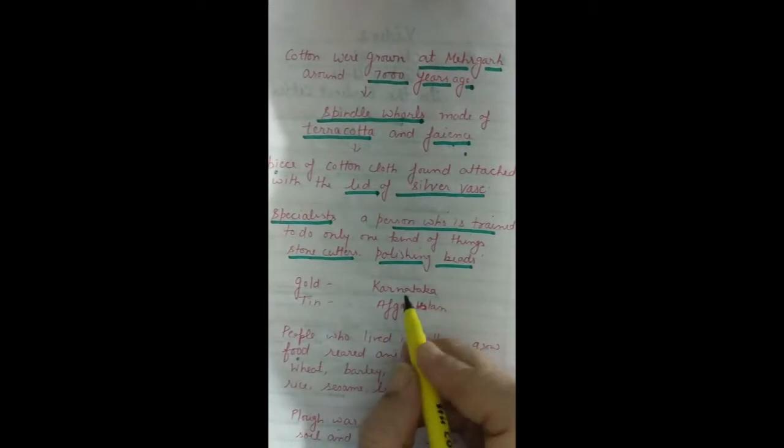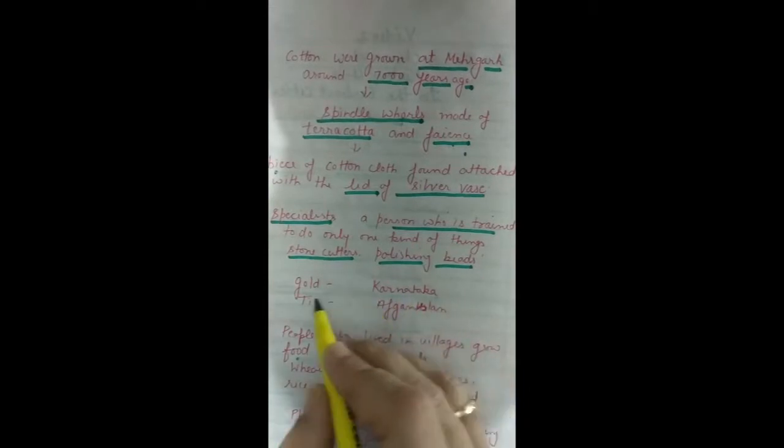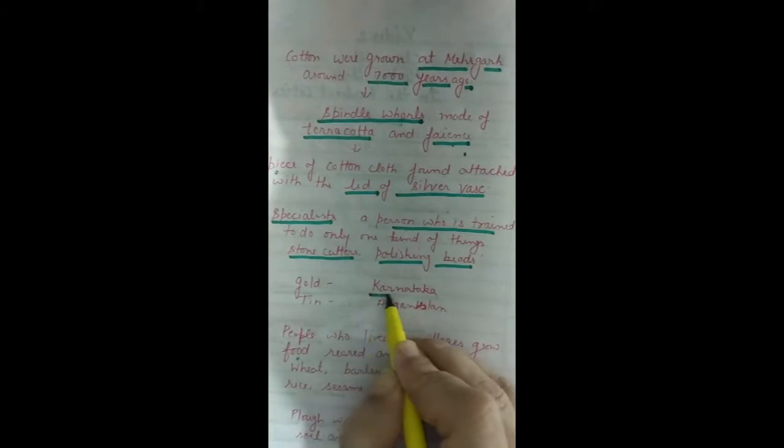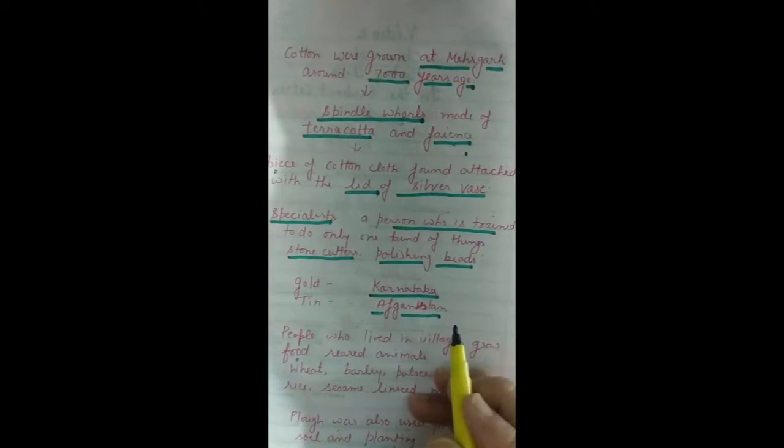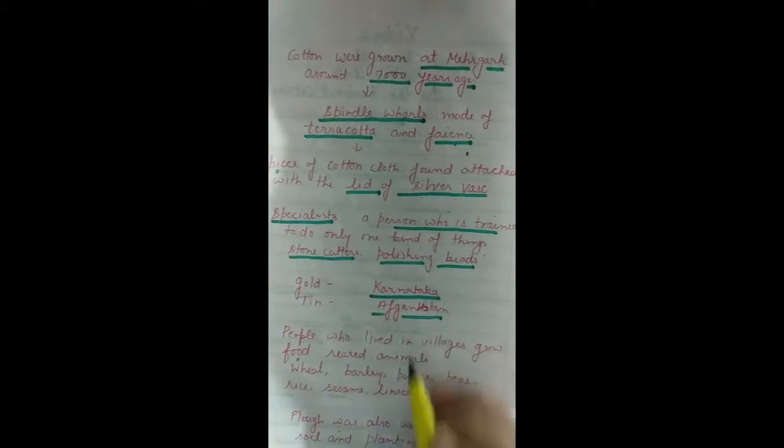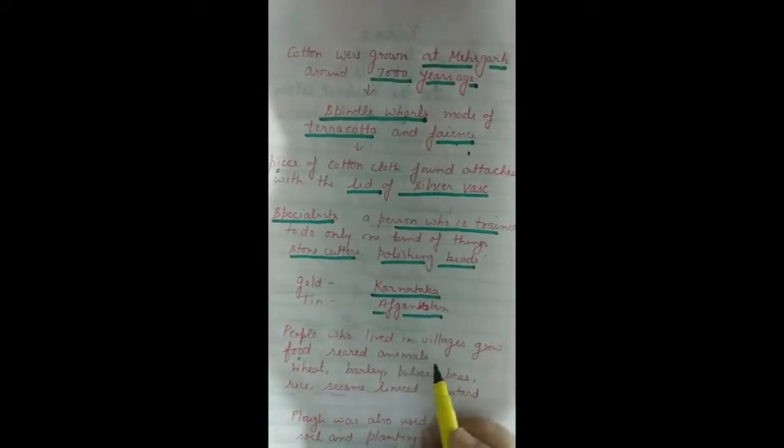Archaeologists have found the evidence that during Harappan civilization, gold was brought from Karnataka, tin was brought from Afghanistan, and many other precious stones were brought from distant lands.